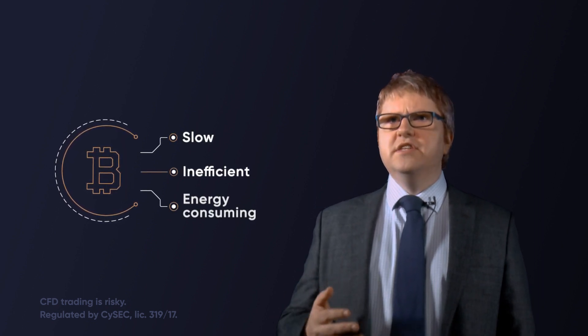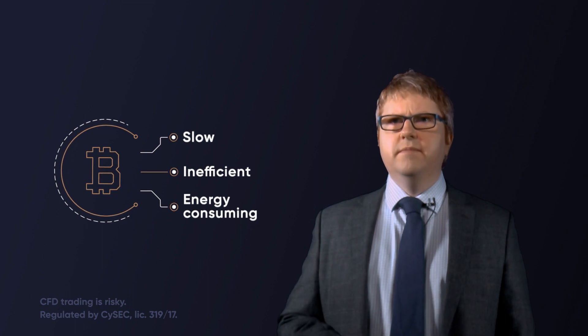For a large popular network like Bitcoin, the proof of work consensus mechanism is very robust. It solves the Byzantine generals problem, but it's also slow, inefficient, and it uses a lot of energy.